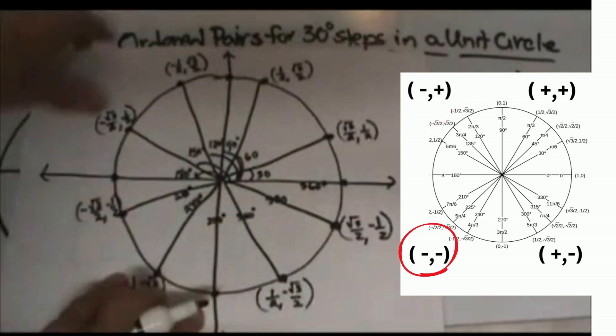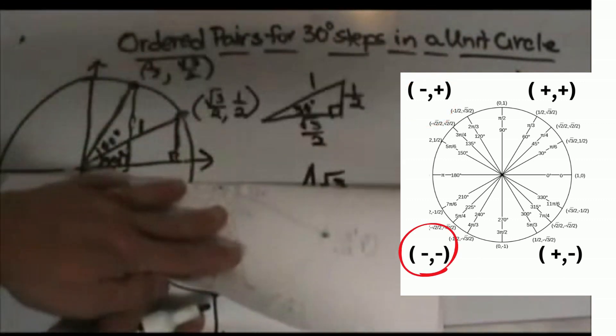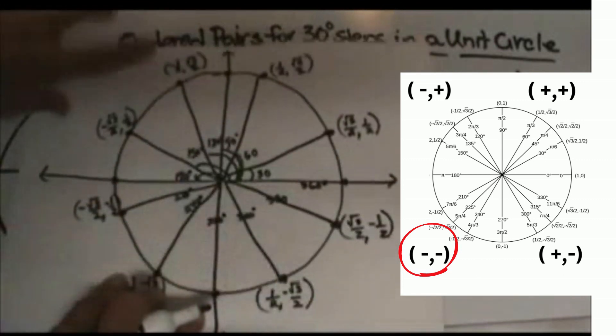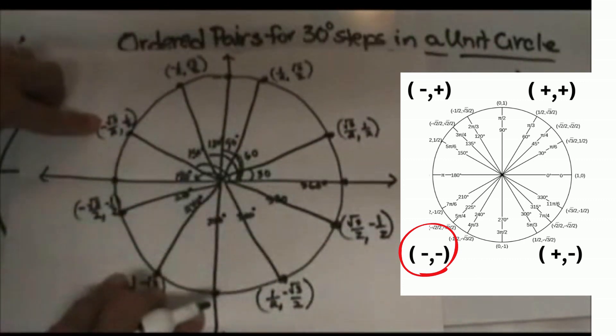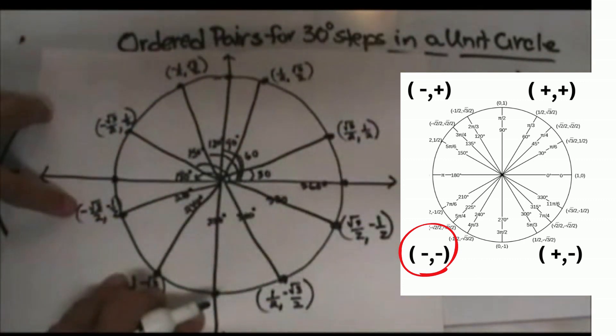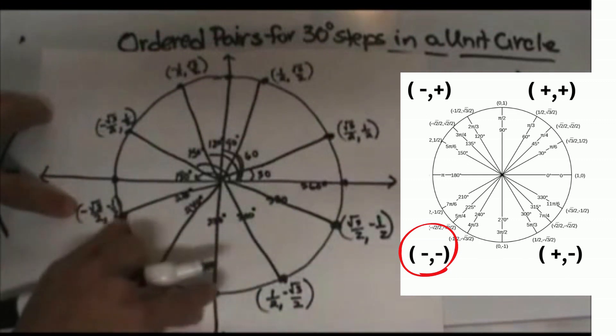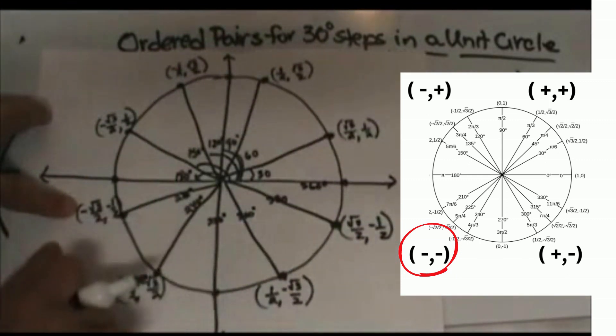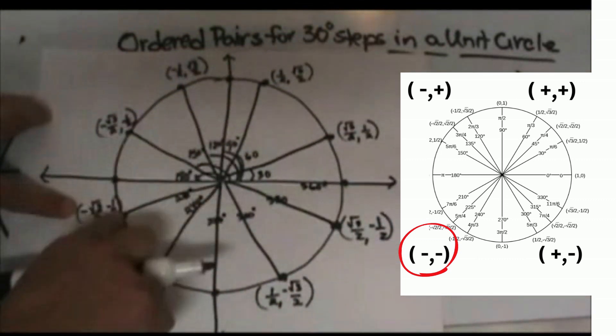To get the bottom, I'm doing a mirror image this time over the x-axis. This point here is a mirror image. The only difference is both coordinates are negative because I'm in quadrant 3, so it's (-√3/2, -1/2).